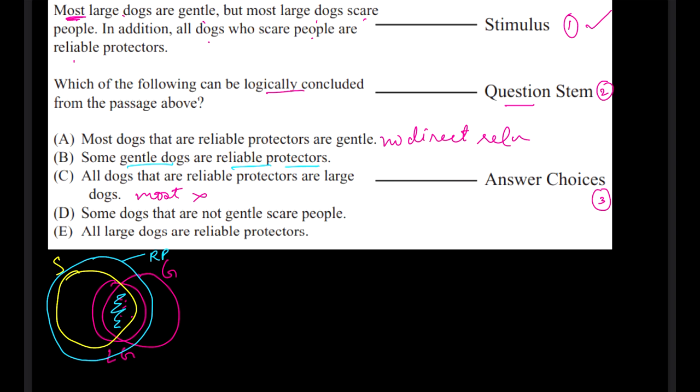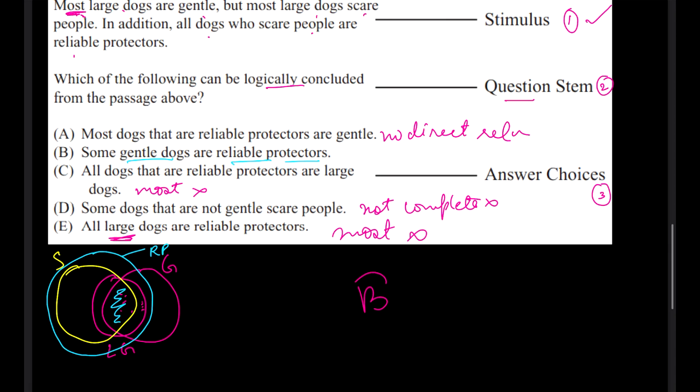Then we have option C: all dogs that are reliable protectors are large dogs, also not really. The point was most here, so because of most we will not take it. Option D: some dogs that are not gentle scare people. This is some dogs which are not gentle, but this is a negative compatibility and we do not go with that because there are many other features to be included. So not complete is the reason for eliminating this. And the fifth one is all large dogs are reliable protectors. Well you see here all dogs who scare people are reliable protectors, not all large dogs. Most large dogs. So because there should be most, this is also gone.